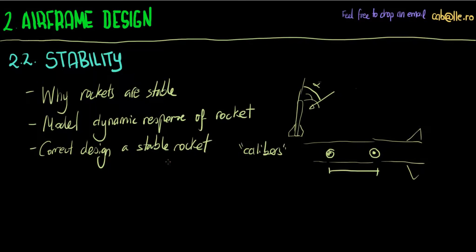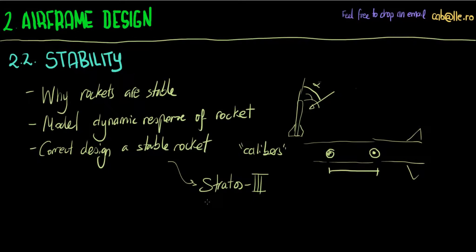We're also going to discuss, for example, why Stratus 3 might have had an anomaly in the flight and was destroyed 26 seconds after liftoff. For those not familiar with Stratus 3, this was a rocket that was designed and manufactured by DARE, which is a student rocket group from TU Delft.